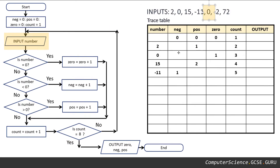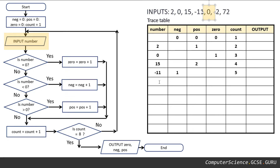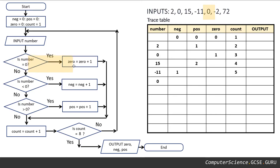We're on to another zero now. So our latest value of number is zero. Is number equal to zero? Yes, it is. Zero equals its previous value plus one.